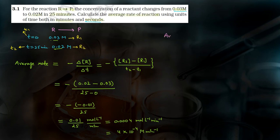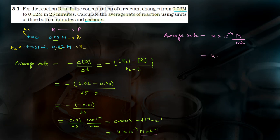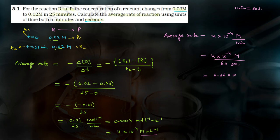The question is not complete yet — the answer in seconds is also required. So now we find the average rate in seconds. We don't need to redo all the calculations. We take the answer in minutes and convert to seconds. Average rate is 4 × 10⁻⁴ mol per litre per minute. Per minute means divided by one minute, and one minute equals 60 seconds, so we divide by 60 seconds instead. 4 divided by 60 gives 6.66 × 10⁻⁶ mole per litre per second.